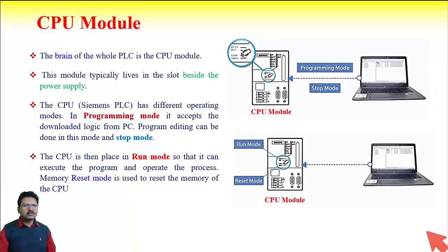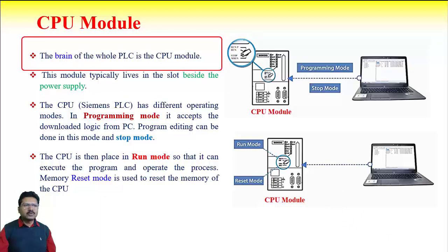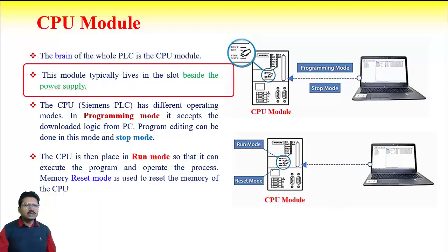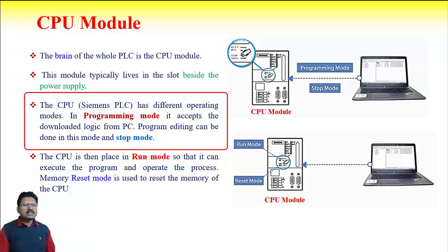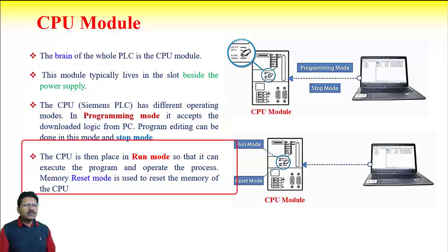The brain of the whole PLC is the CPU module. This module typically lives in the slot beside the power supply in older PLCs; nowadays any module can be placed anywhere. The CPU of the PLC has different types of operating modes. For example, in Siemens PLC the operating modes are programming mode, stop mode, and run mode. In programming mode, the PLC accepts downloaded logic from a programmer or PC. Program editing can be done in programming mode and stop mode. When we need to run the PLC, the CPU is placed in run mode so it can execute the program and operate the process. Memory reset mode is used to reset the memory of the CPU.